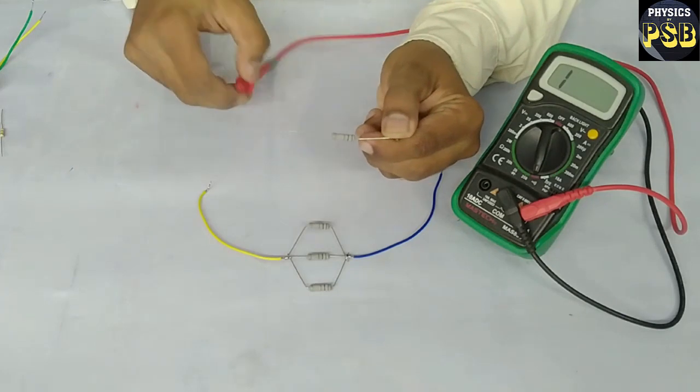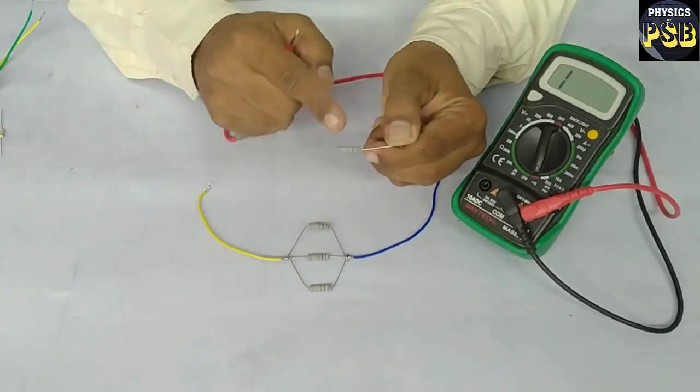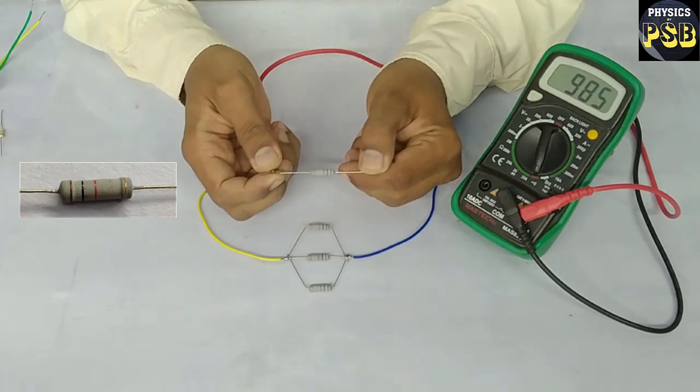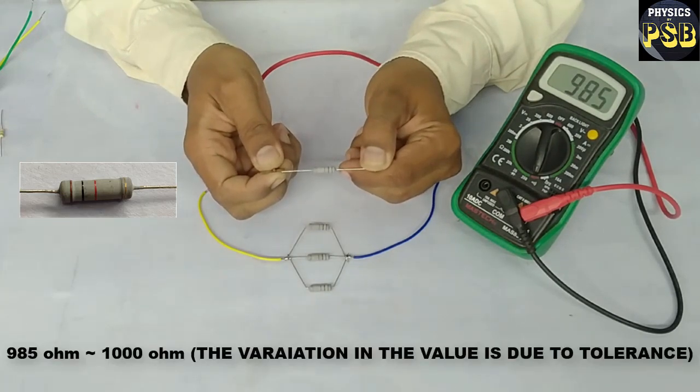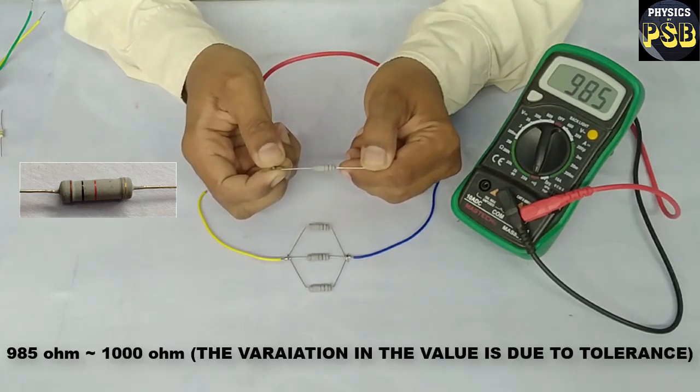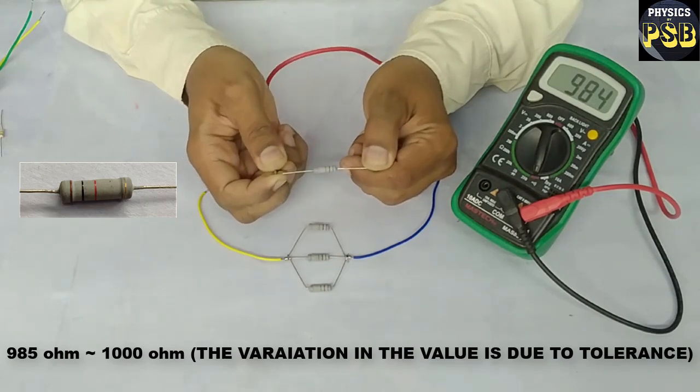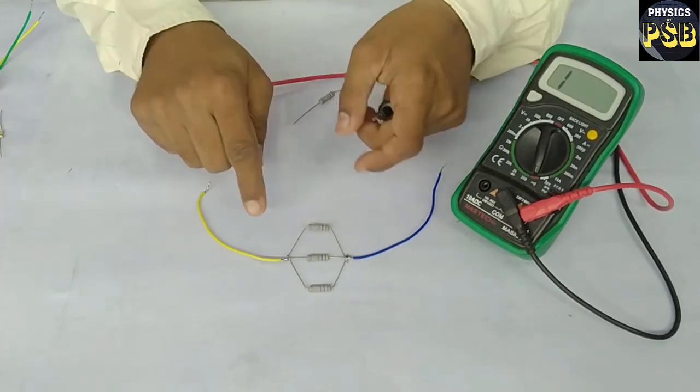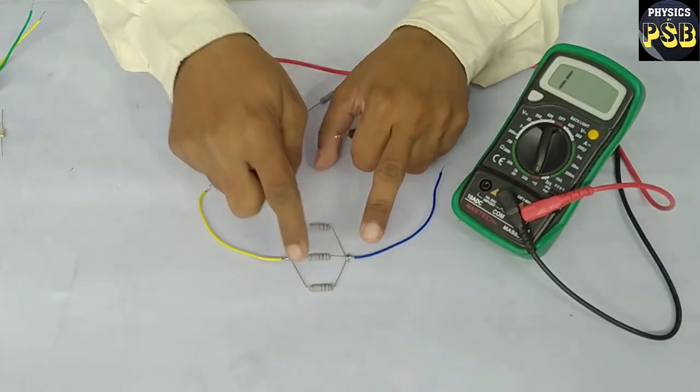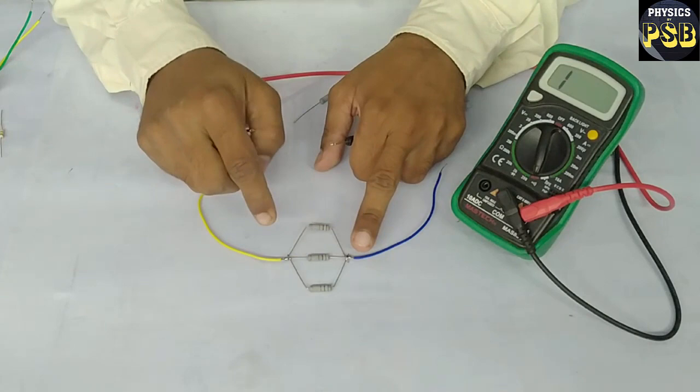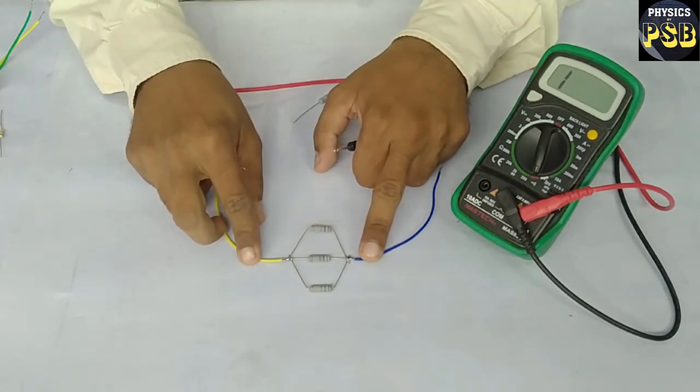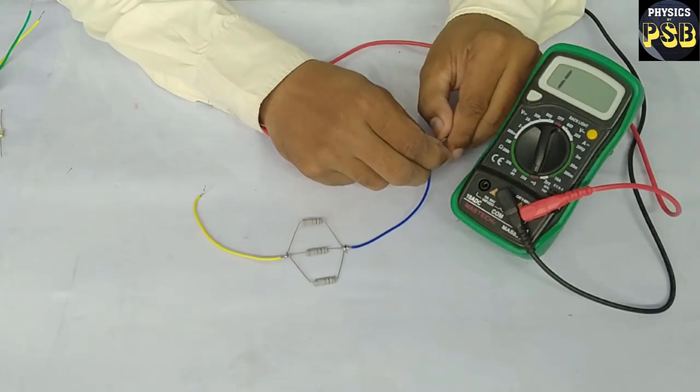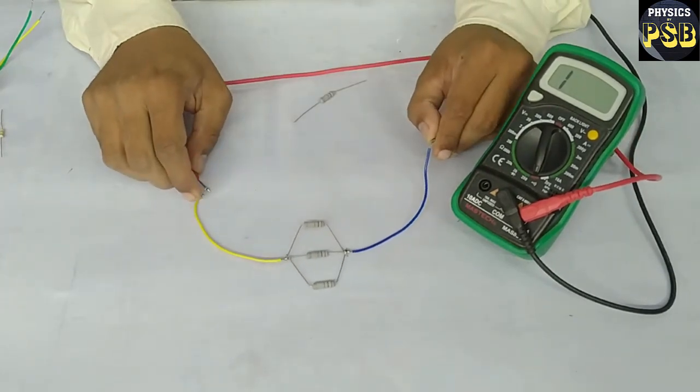I have set the multimeter to read the resistance. When I place the probes at the ends of the resistor, you can observe it reads 985, which is around 1000 ohms.